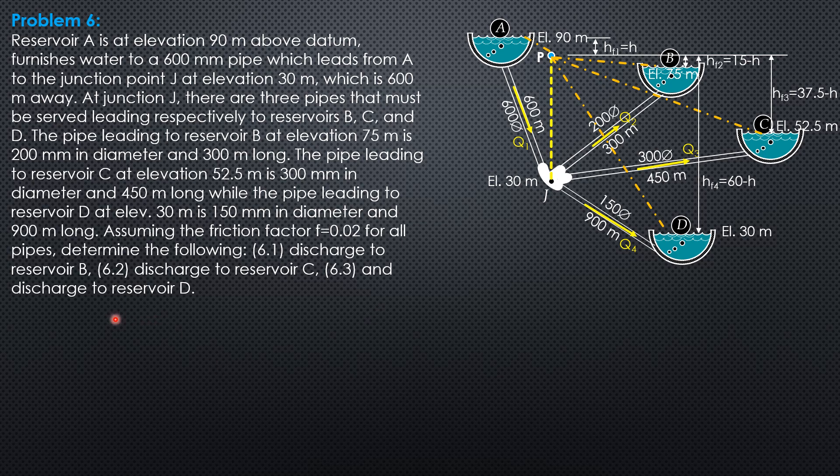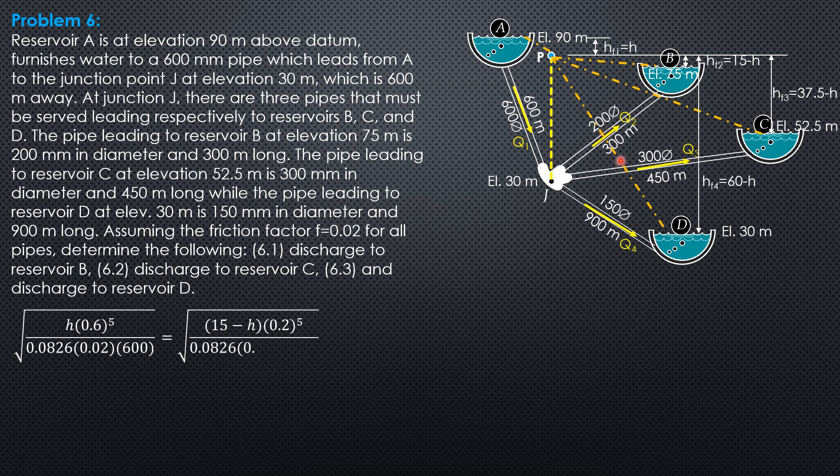Substitute into Q1 equals Q2 plus Q3 plus Q4, where Q1 is square root of H diameter 0.6 to the fifth over 0.0826 times 0.02 times 600. Q2 is square root of quantity 15 minus H, 0.2 to the fifth over 0.0826 times 0.02 times 300.